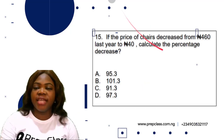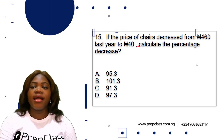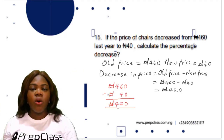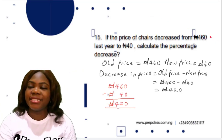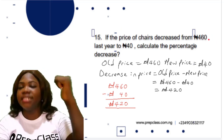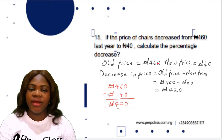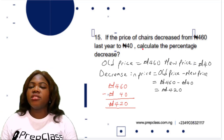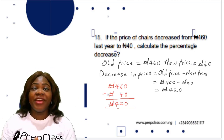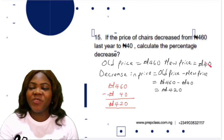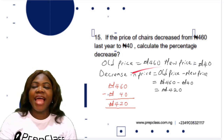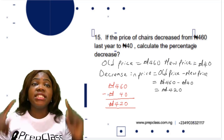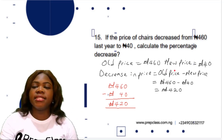If the price of chess decreased from 460 naira last year to 40 naira, calculate the percentage decrease. So first of all, what is the old price? It decreased from 460 naira, so the old price is 460 naira. Then it decreased to 40 naira, so the new price is 40 naira. To calculate the percentage decrease, we first need to find the decrease in price: old price minus new price.